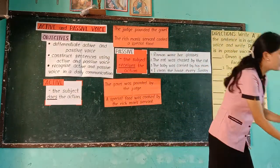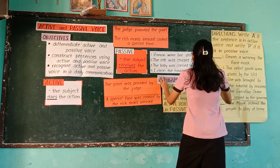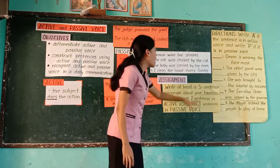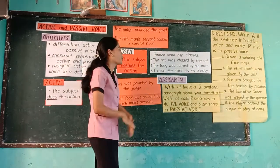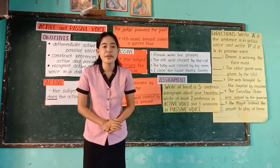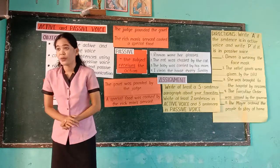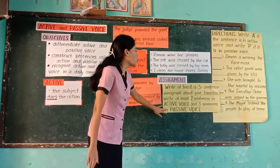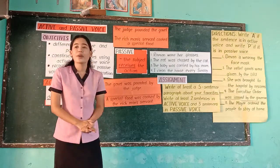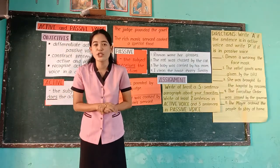For your assignment, class, you are going to write at least a five-sentence paragraph about your favorites. Write at least two sentences in active voice and three sentences in passive voice. Write that on a one-half crosswise paper. Alright, that's all for today, class. Thank you so much.